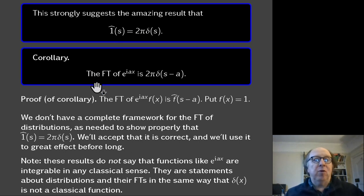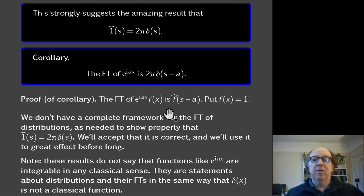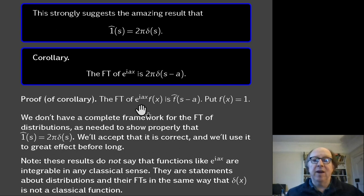There is a quick corollary: the Fourier transform of e^{iax} f(x) is f̂(s−a). So shifting the input by a complex exponential shifts the transform.